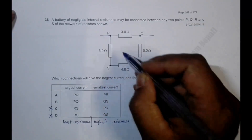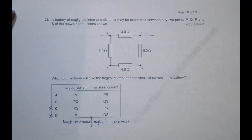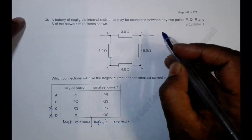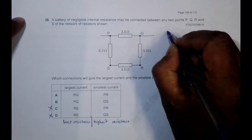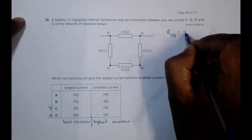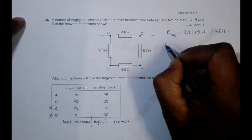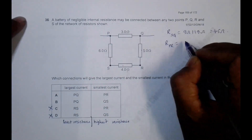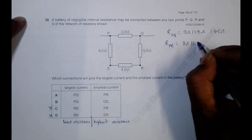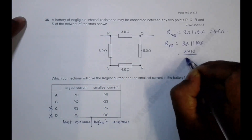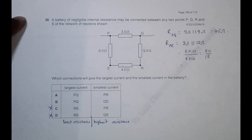So R across SQ equals 9 ohm parallel with 9 ohm, which equals 4.5 ohm. If I connect across P and R, it will be 3 plus 5 equals 8 ohm on one path, and 6 plus 4 equals 10 ohm on the other path. So R_PR equals 8 ohm parallel with 10 ohm, which is 8 times 10 divided by 8 plus 10, equal to 80 divided by 18.